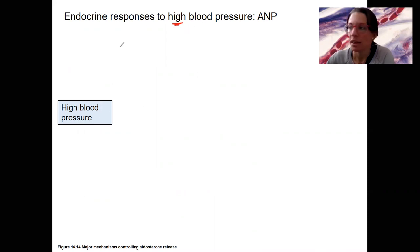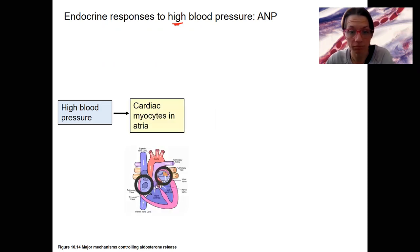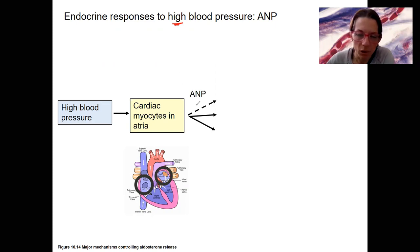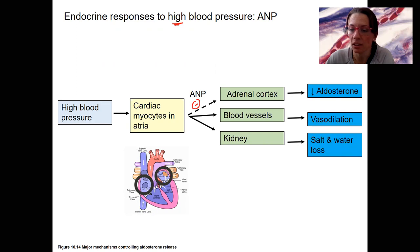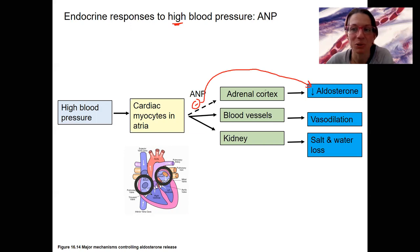ANP responds to high blood pressure and targets cardiac myocytes in the atria. Atrial natriuretic peptide is an inhibitor — that's what the dashed line in the diagram means. It inhibits aldosterone, which is produced in the adrenal cortex as a mineralocorticoid, along with other steroid hormones. Blood vessels dilate — specifically the tunica media — and this ties things together.